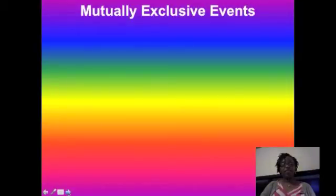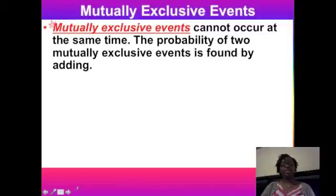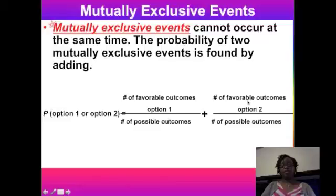Now let's move on to mutually exclusive events. Flip over your video notes sheet to get the definition. Mutually exclusive events cannot occur at the same time, and the probability of two mutually exclusive events is found by adding. The formula is: favorable outcomes for option one plus favorable outcomes for option two, all over the total number of possible outcomes.